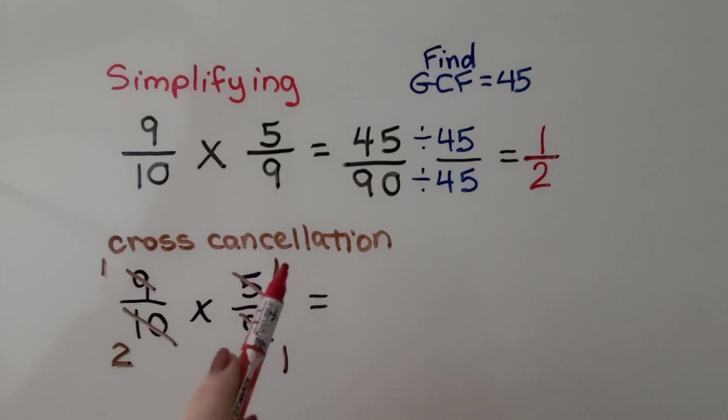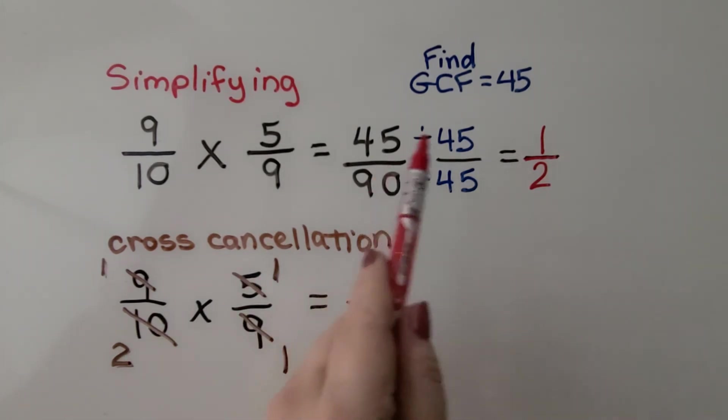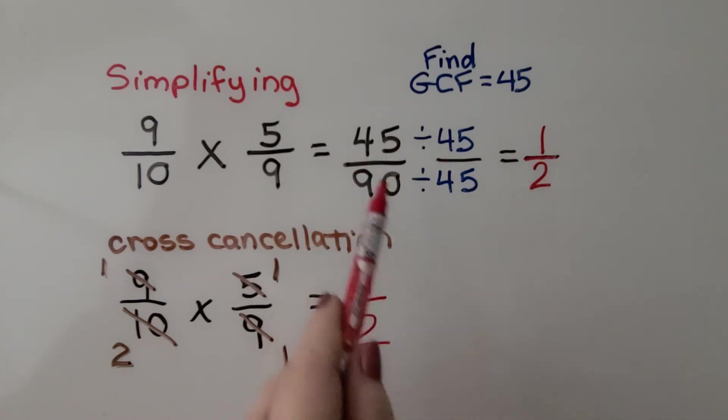We didn't have to do this. Instead of finding the GCF for this fraction that needed to be simplified, we found the GCFs here in the numerators and denominators so that when we did multiply, it was already simplified. Let's try it again.